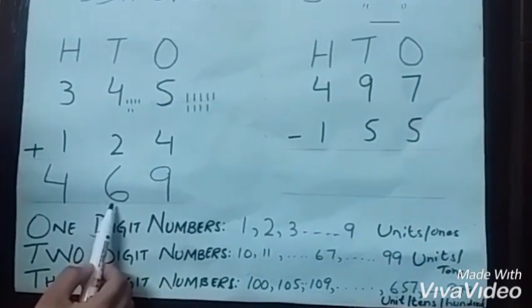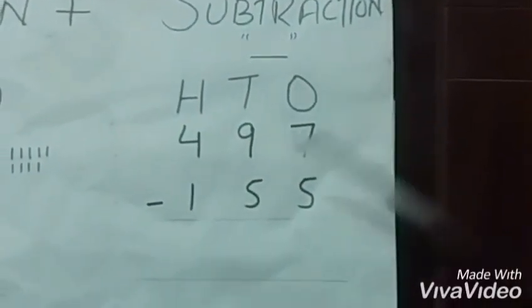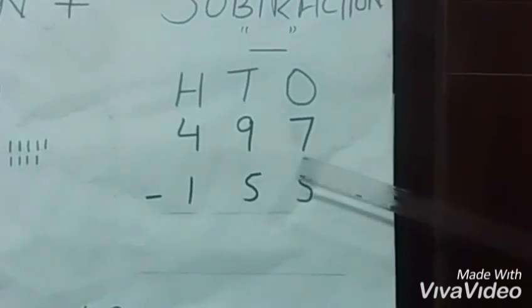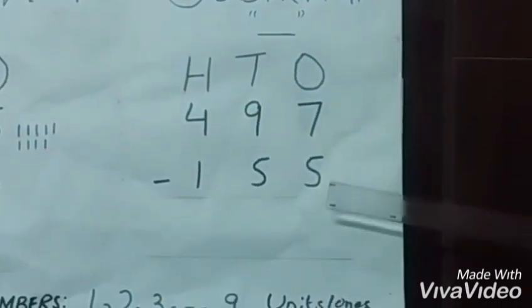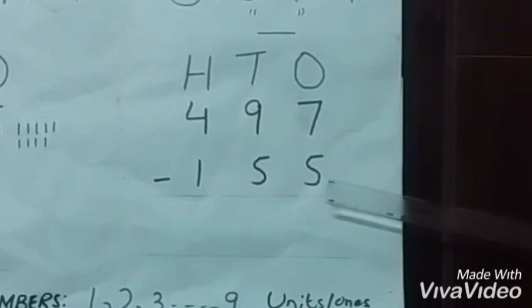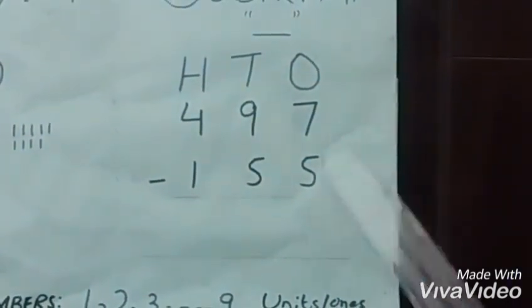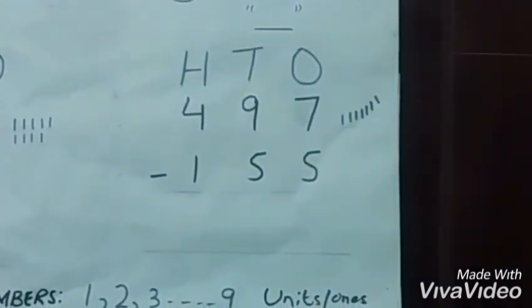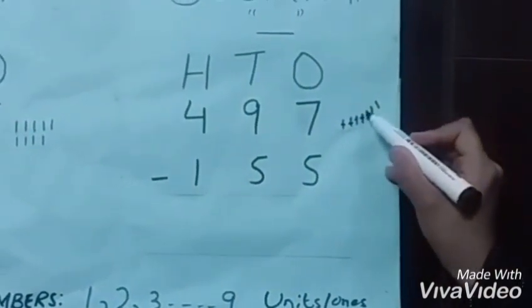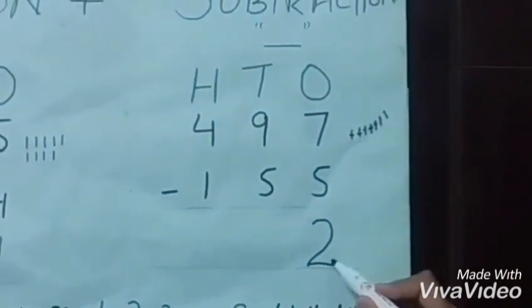Now subtracting three-digit numbers. We have 497 as the first number and 155 as the second. In 497, we have seven ones, and in 155, we have five ones. As we added the ones first in addition, in subtraction we will subtract ones first.